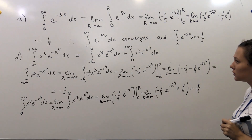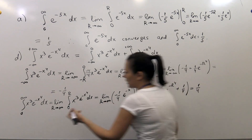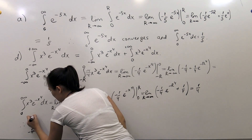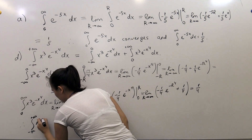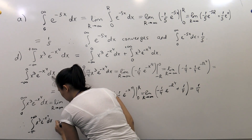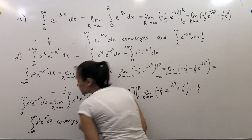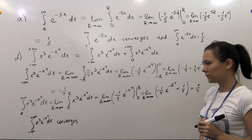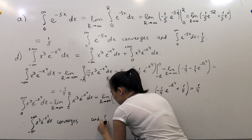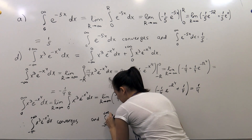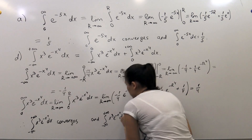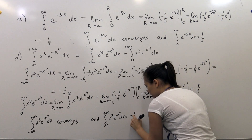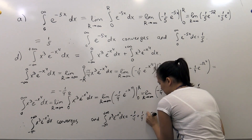We have found the second integral, and we have that the integral from minus infinity to plus infinity of x³ e^(-x⁴) dx converges — this is because both sub-integrals converge. The value of this integral is the sum of the two values: minus 1 over 4 plus 1 over 4, which equals 0.